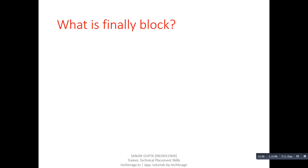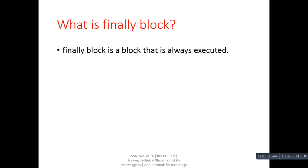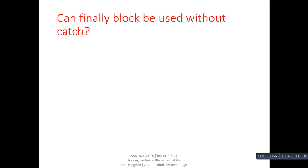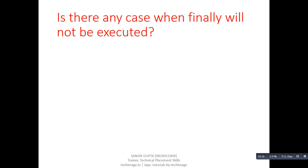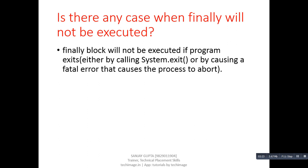Next question: what is finally block? Answer: Finally block is a block that is always executed. Next question: can finally block be used without catch? Answer: Yes — a try block must be followed by either catch or finally. Next question: is there any case when finally will not be executed? Answer: Finally block will not be executed if the program exits either by calling System.exit() or by causing a fatal error that causes the process to abort.